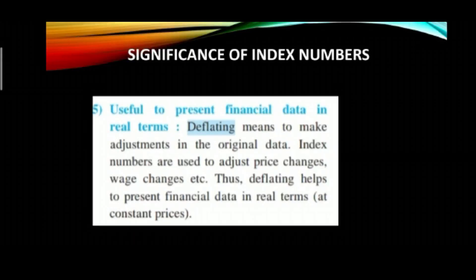Fifth: useful to present financial data in real terms — this is called deflating. Deflating means making adjustments in the original data. Index numbers are used to adjust price changes, wage changes, etc. Thus deflating helps to present financial data in real terms at constant prices. When you present financial data in real terms, you adjust for price changes and wage changes over the years, and to represent this we take the help of index numbers. These were the five points on the significance of index numbers.